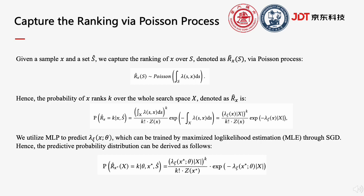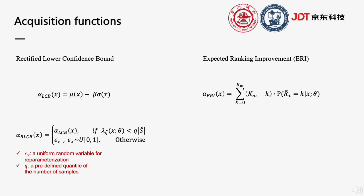To sum up, we capture the ranking of samples via Poisson process. We also derived two acquisition functions from vanilla LCB and EI for the Poisson process surrogate model.